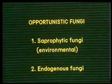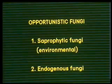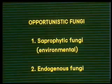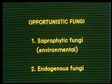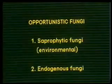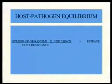The opportunistic fungi are saprophytic or endogenous. By endogenous, we mean they're already inside the body. Typical examples are: we all have some Candida, and we all probably have some actinomyces — endogenous organisms. When you change the host resistance or the number of organisms, without even changing the virulence, you get infection.